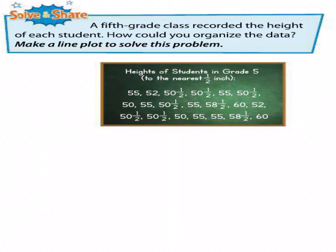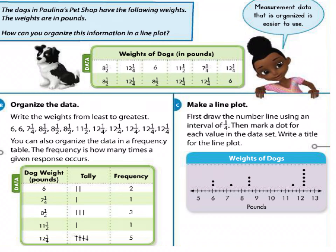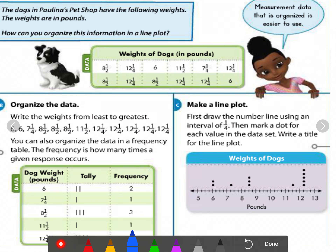Here I will show you this example, which is very important because it gives us a complete and deep understanding of the lesson. The dogs in Bolina's pet shop have the following weights, in pounds. How can you organize this information in a line plot? In a previous lesson we discussed what we mean by a line plot, so first we need to organize the data to make it easier to use.